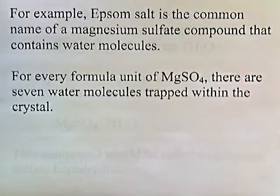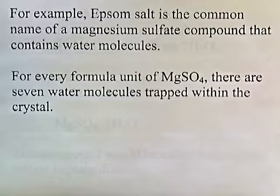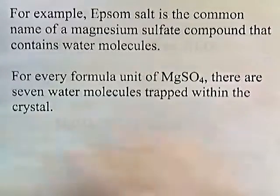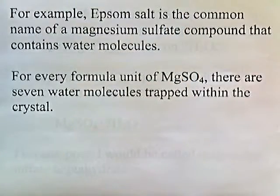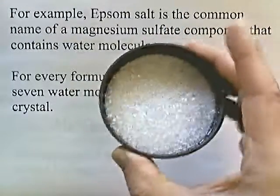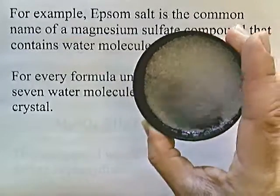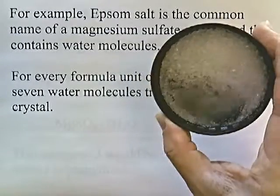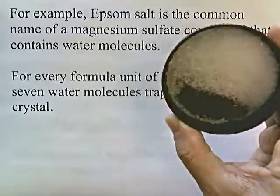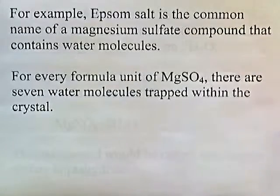For example, Epsom salt is the common name of a magnesium sulfate compound that contains water molecules. For every formula unit of magnesium sulfate, there are seven water molecules trapped within the crystal. So I have some magnesium sulfate right here — this is just stuff you can get at the store. That's magnesium sulfate. It's just a white crystal and it looks dry, but there are actually water molecules trapped within the crystals.